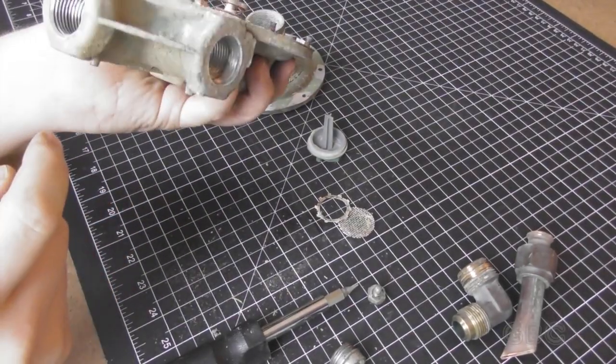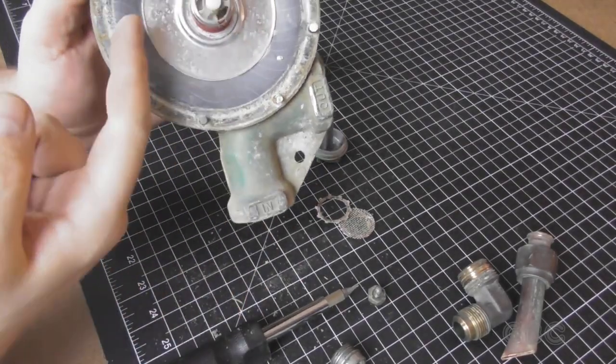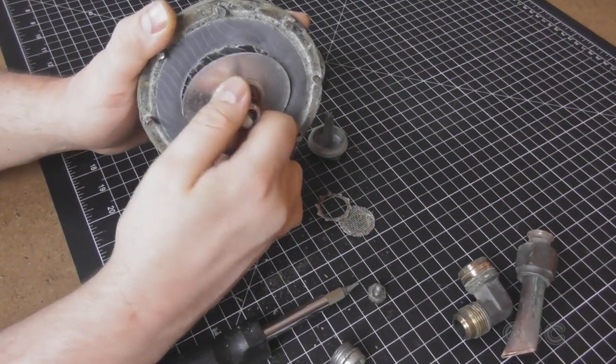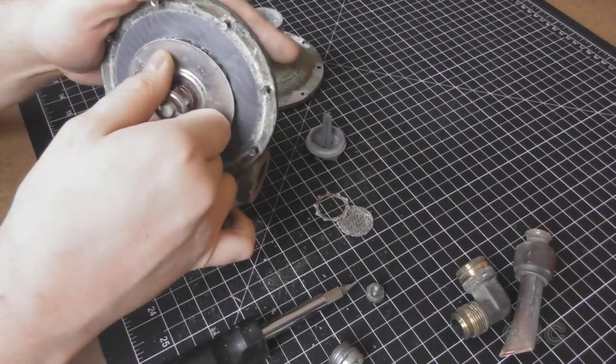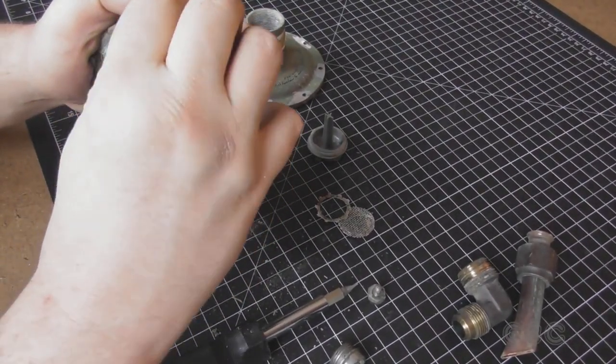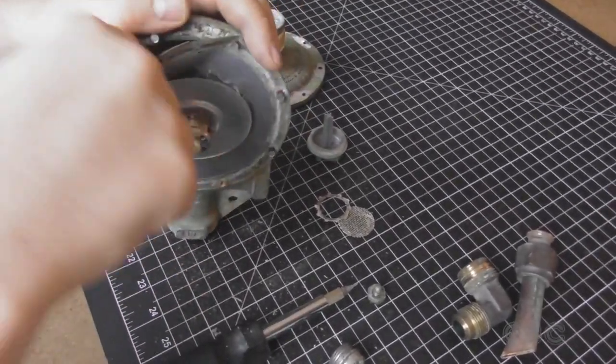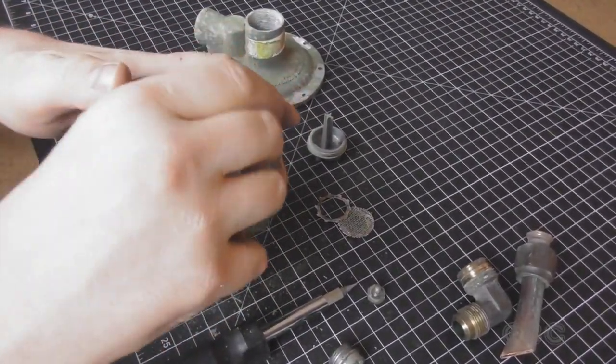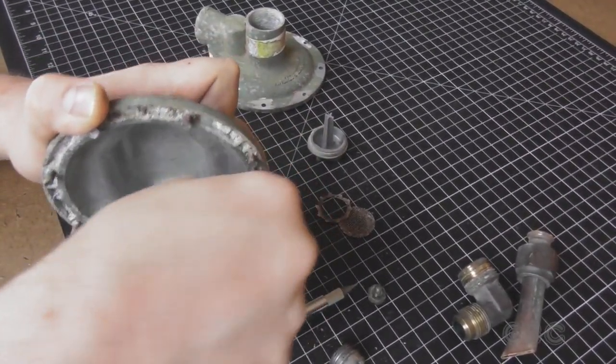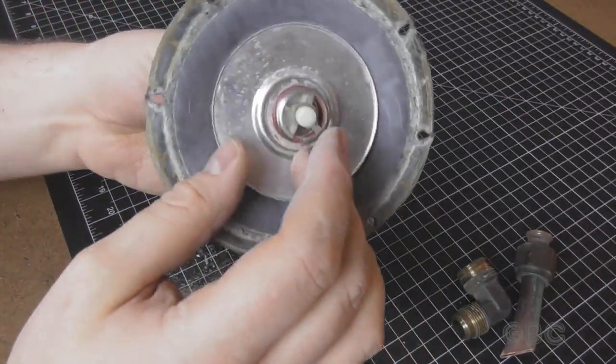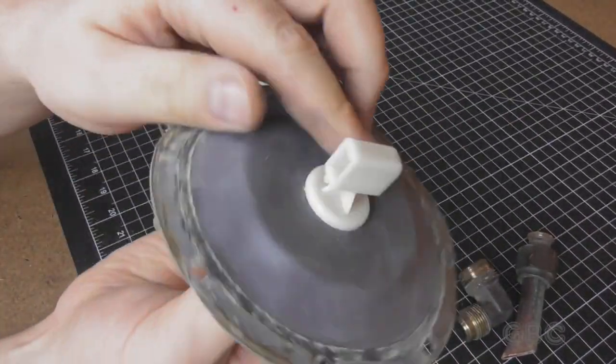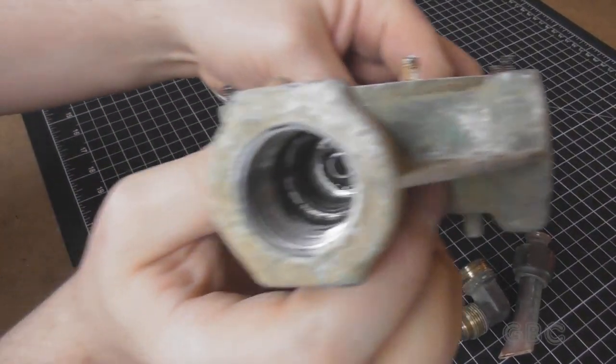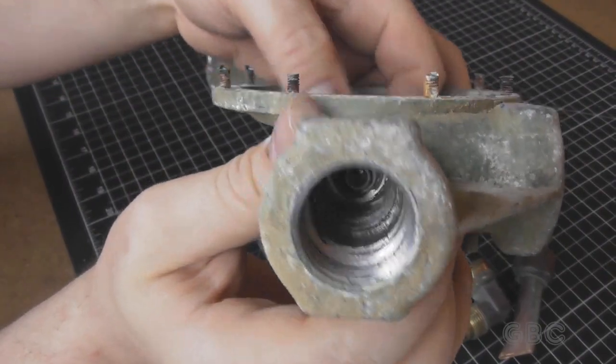So the gas comes in here through the input and pushes against the back of the diaphragm against the pressure of the spring. I'm going to pull this apart. And on the back of the diaphragm there's this plastic block and that actuates this lever. That is what is opening and closing the inlet valve. It's moving that rubber headed bolt up and down.